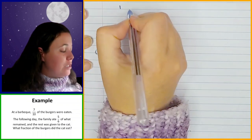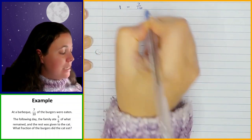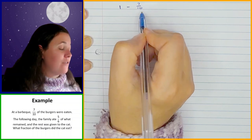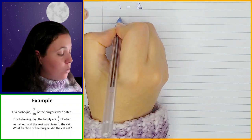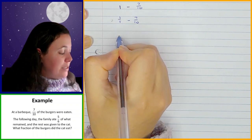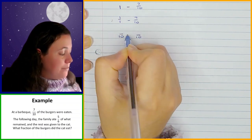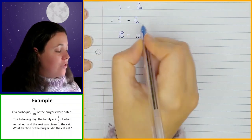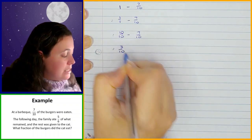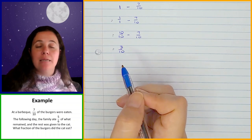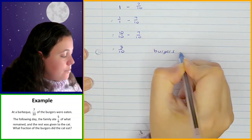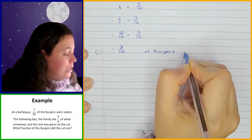The total amount of burgers minus seven tenths is how much was left after the barbecue. One is the same as one over one, minus seven tenths. The LCD is 10, so that's 10 over 10 minus seven over 10, which gives me three tenths. So three tenths is how much was left — if they ate seven tenths, three tenths remain.